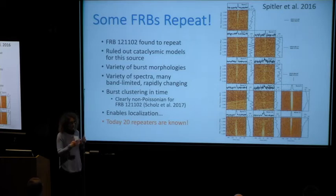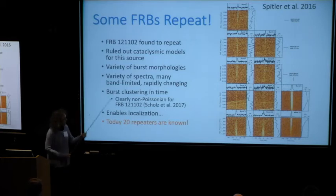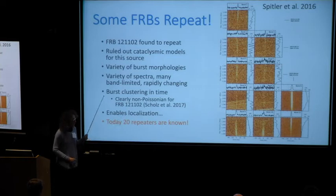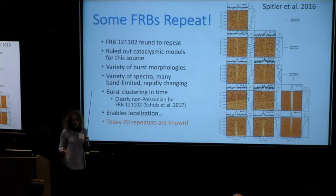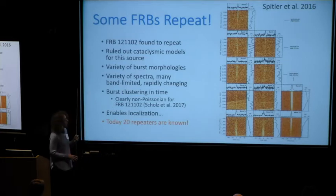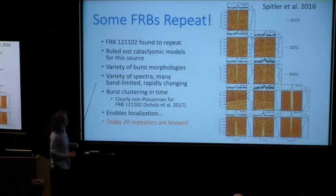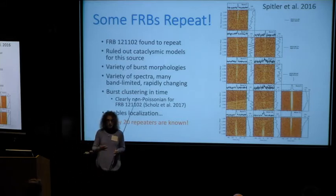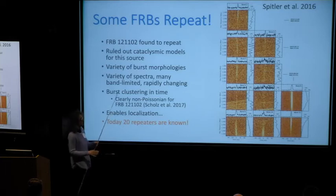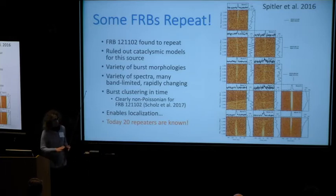Today there are 20 known repeaters in the literature. Most don't have enough bursts to say with certainty whether they're Poissonian, but certainly for FRB 121102 and at least one other, there's definite clustering. The phenomenology — a source that can repeat, flip its spectrum, and have all these different morphologies — is quite interesting.